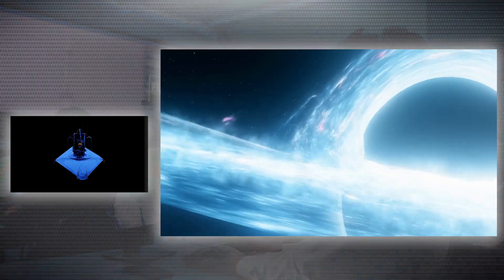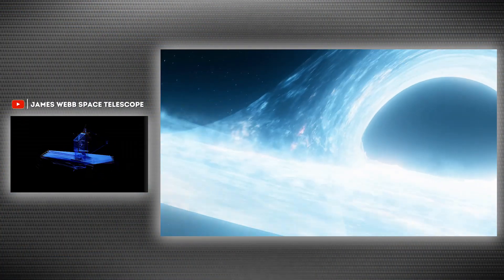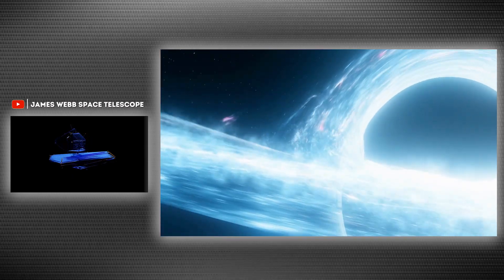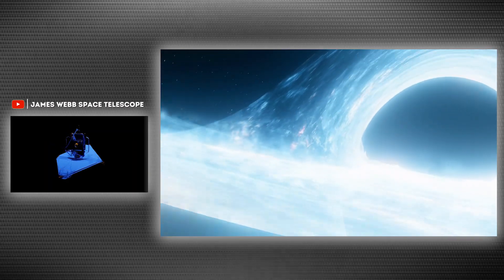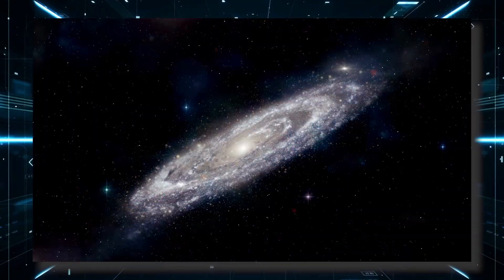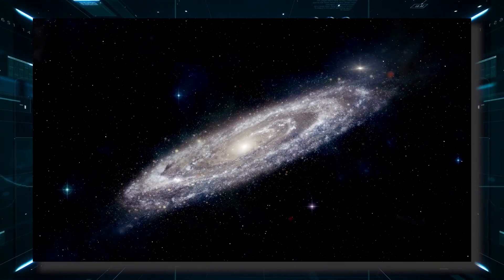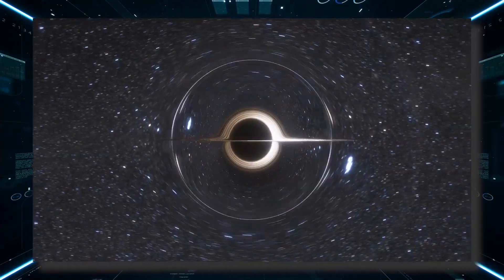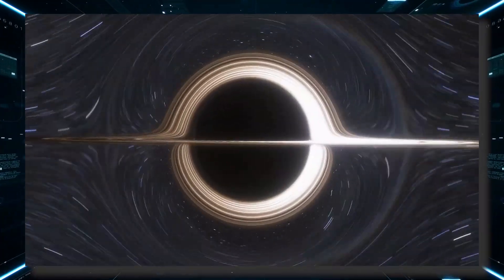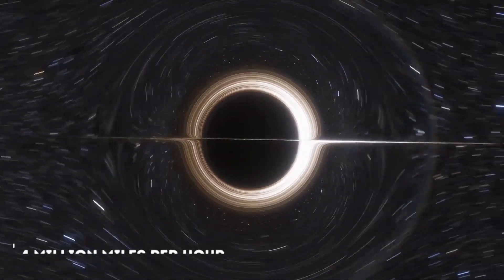In a surprising turn of events, NASA's James Webb Space Telescope has made a discovery that has astronomers around the world in awe. A few weeks ago, the telescope discovered the earliest known galaxy in the universe, but now it has detected something even more massive: a supergiant black hole moving away from its galaxy at an incredible speed of 4 million miles per hour.